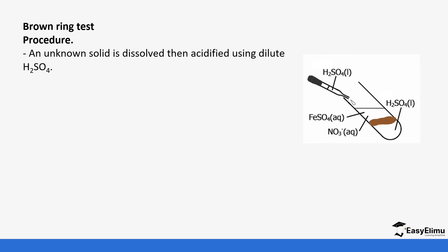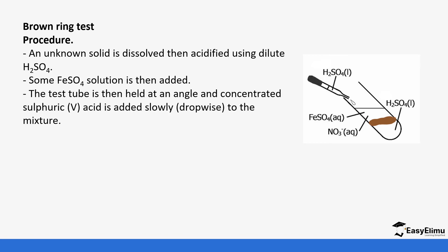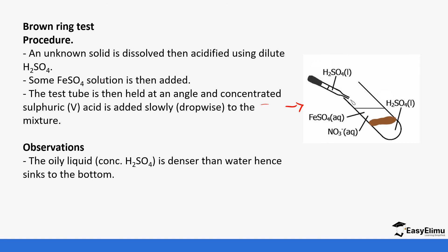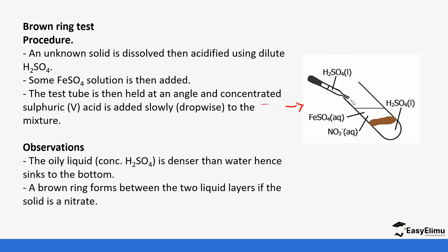In the brown ring test, the unknown solid is dissolved, then acidified using dilute sulfuric acid. Iron(II) sulfate solution is added. The test tube is held at an angle, and then concentrated sulfuric acid is added dropwise to the mixture. As it is added, a brown ring forms, and the concentrated sulfuric acid — being denser than water — sinks to the bottom. The brown ring around the test tube confirms that the unknown solid contains nitrate ions.